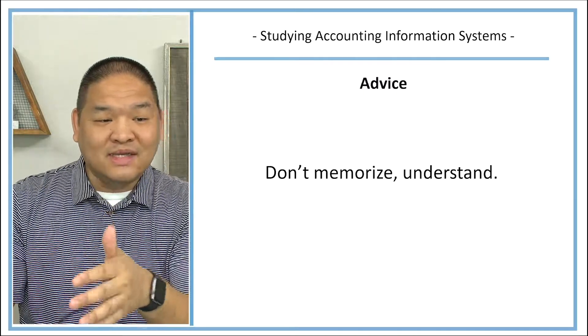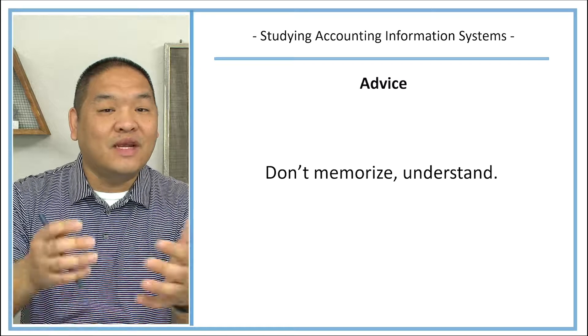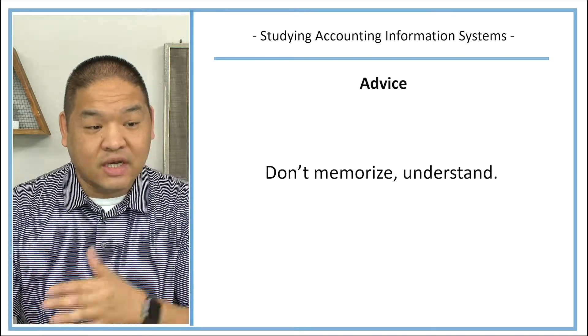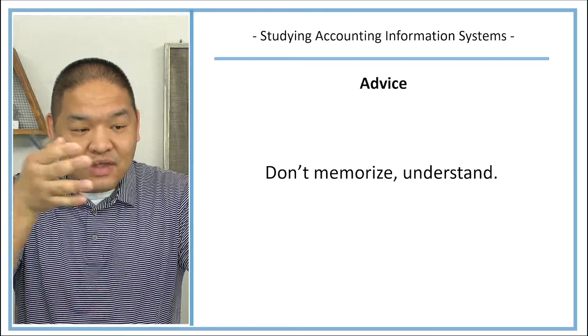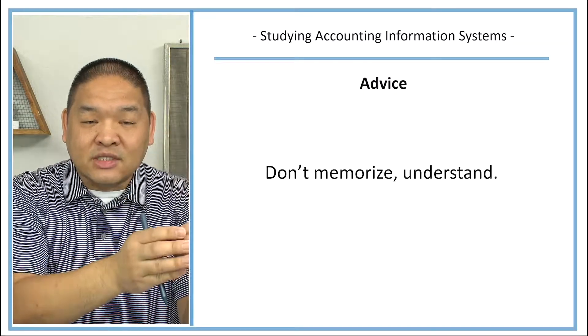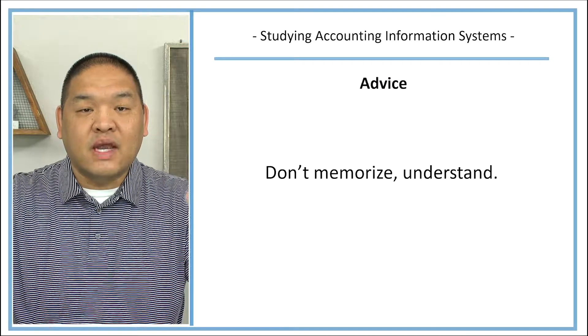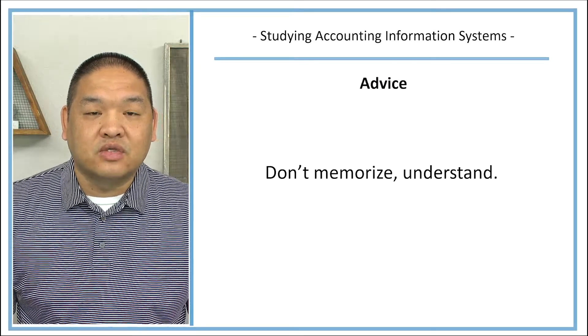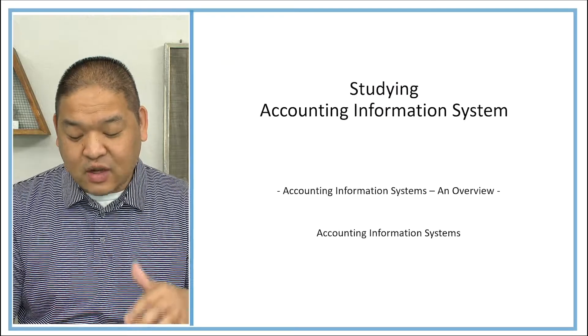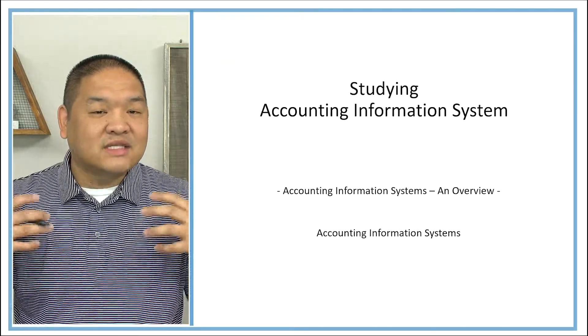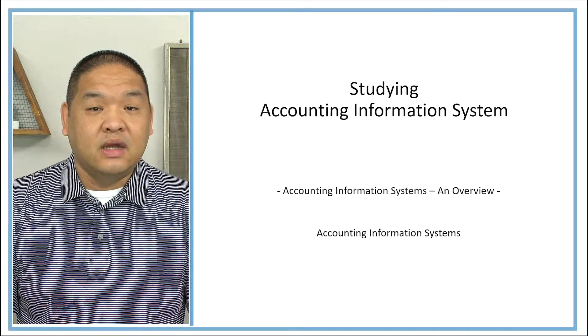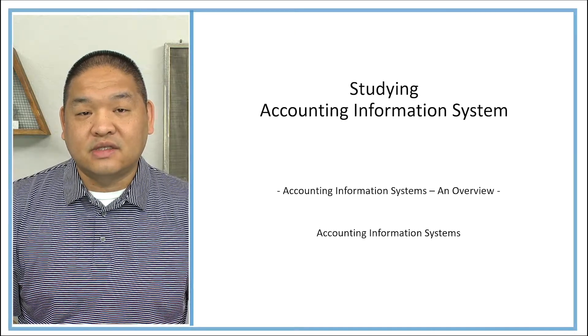So when we give you a definition, for instance, or a key term and its definition, you might need to memorize it at the beginning, but you really should understand what that term is. What is data? Well, it's not X, Y, and Z. Data is the things that we put into an information system in order to create information. If you understand the big picture of what data actually is, rather than the definition, you'll understand how that small segment plays into the greater information systems that we're trying to understand from an accountant's perspective.